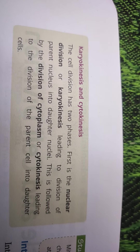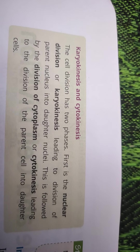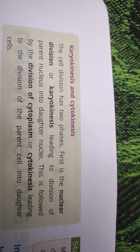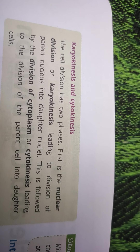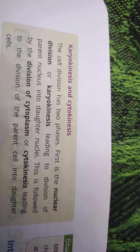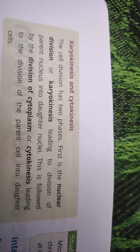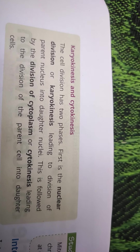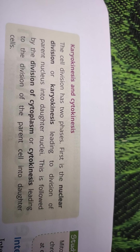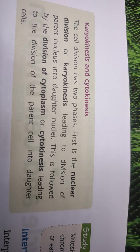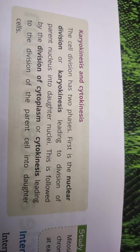What is karyokinesis and cytokinesis? Cell division has two phases. On the basis of the division of the cytoplasm and nucleus, cell division is categorized into karyokinesis and cytokinesis. Karyokinesis is nuclear division — the parent nucleus divides into daughter nuclei. This is followed by cytokinesis, which is the division of the cytoplasm, leading to the division of the parent cell into two daughter cells.